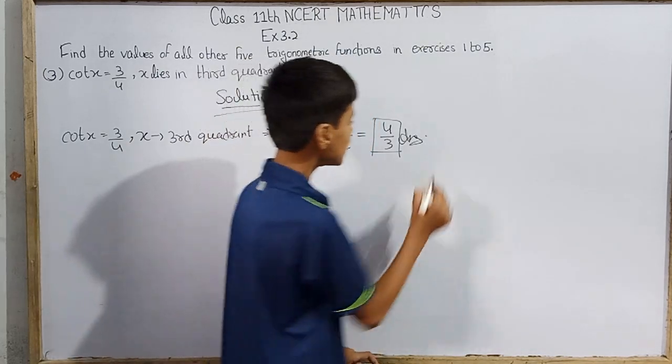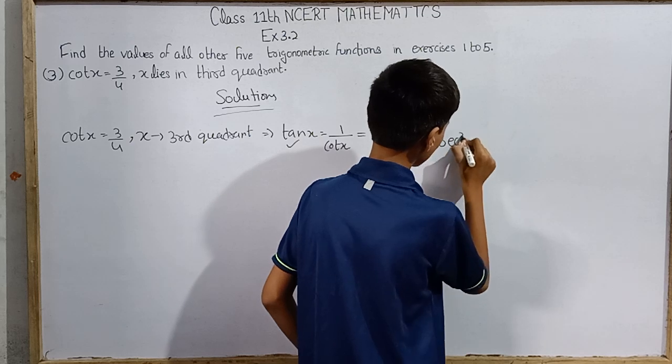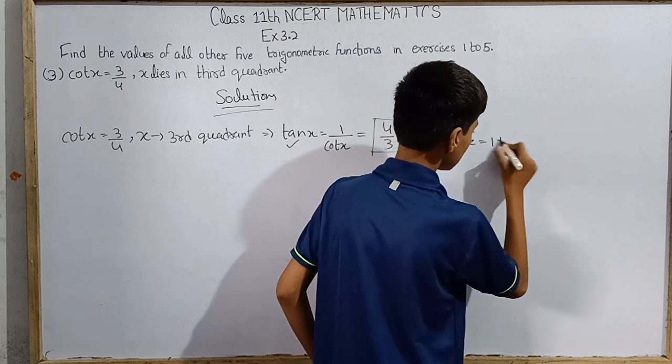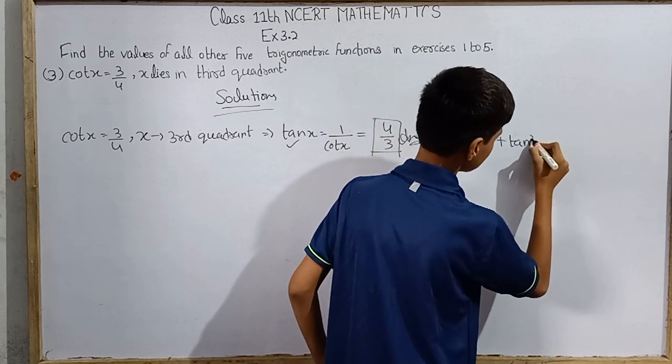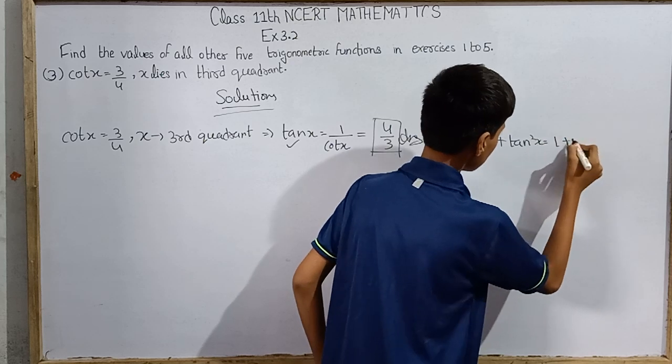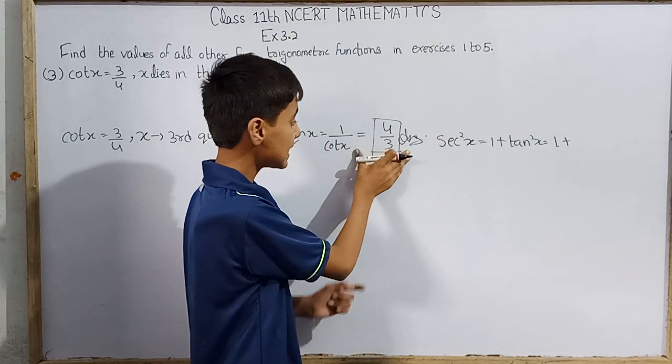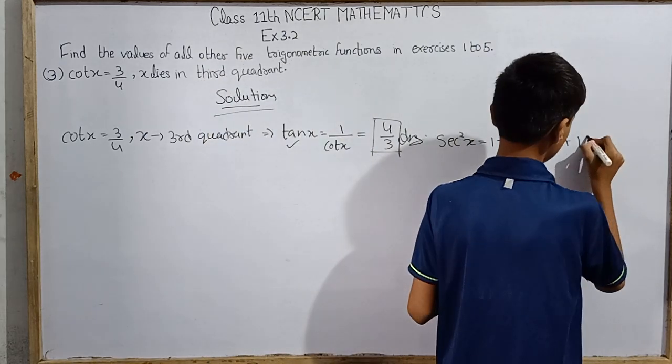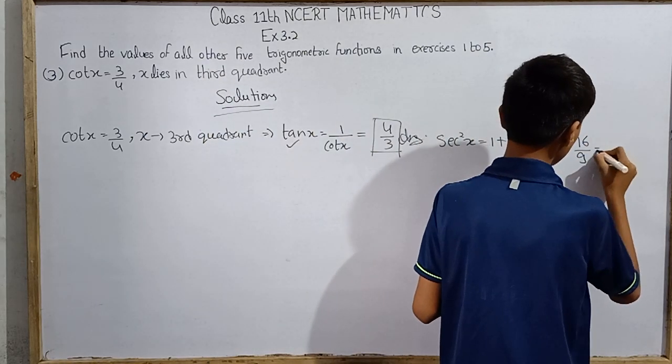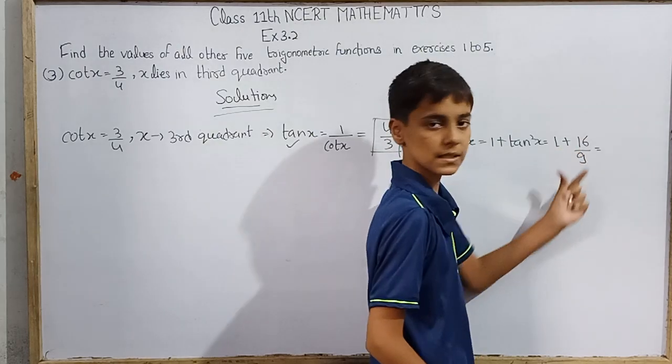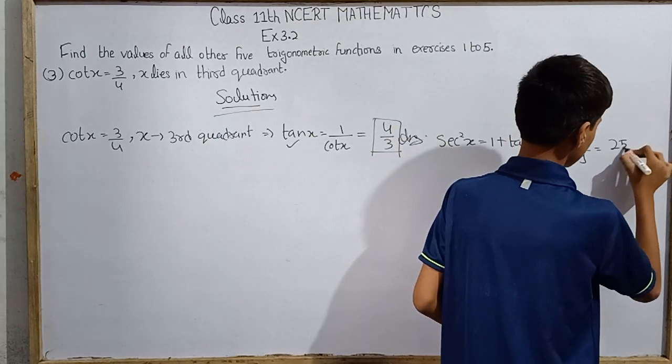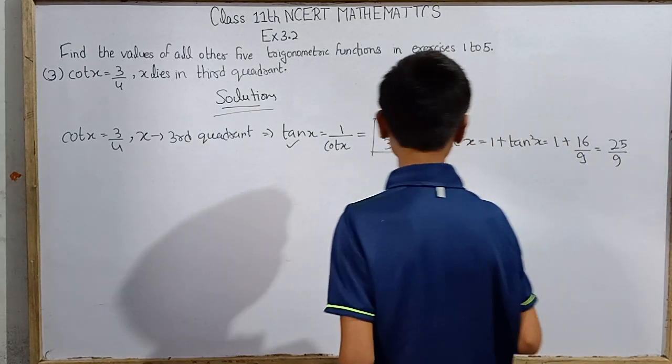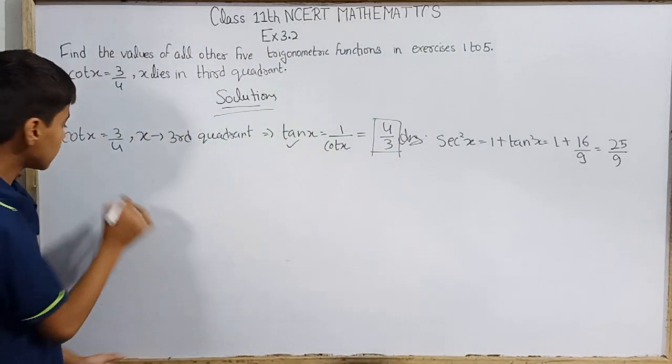Next, we can use the equation that sec²(x) equals 1 plus tan²(x). This is 1 plus tan²(x), which is 1 plus 16/9. This is over 9, so 9 plus 16 is 25. 25 over 9. So we can see that sec²(x) has such a value.